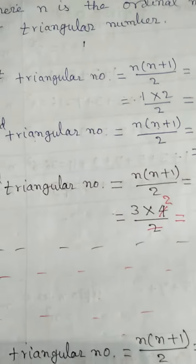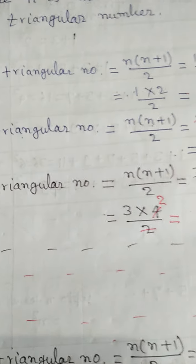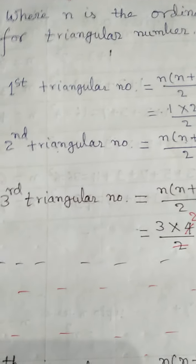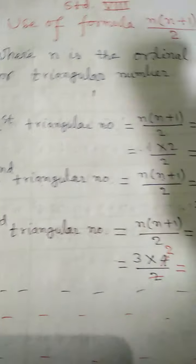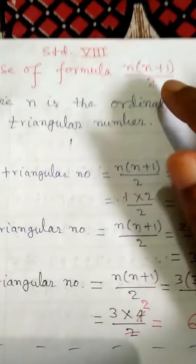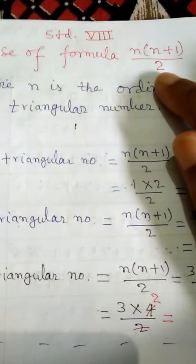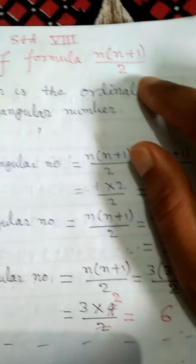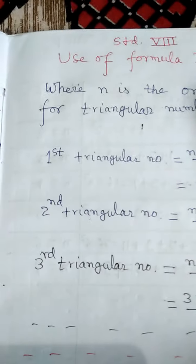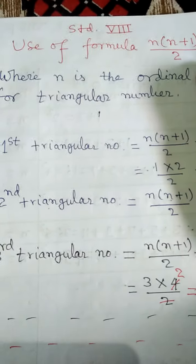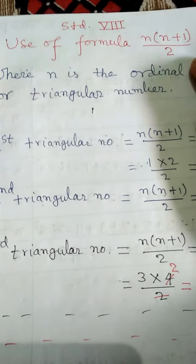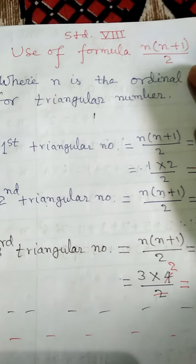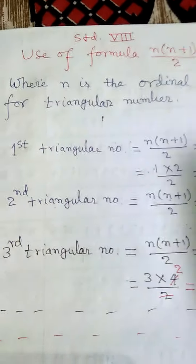Now I am going to find the nth triangular number with help of this formula, that is n into n plus 1 by 2. I will put natural numbers in place of n.